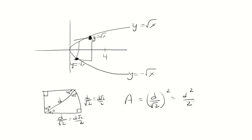This is the formula we need: take the diagonal, square it, and divide by 2. This goes inside the integral from 0 to 4. The diagonal goes from y = √x to y = -√x, so we subtract those to get 2√x, then divide by √2 and square that.